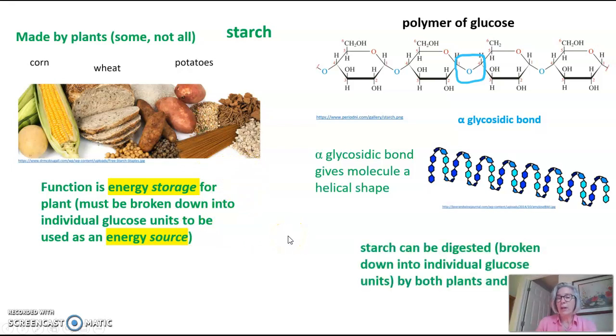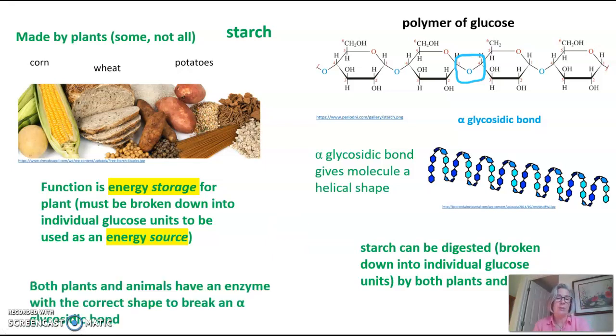Starch can be digested or broken down into individual glucose units by both plants and animals because both plants and animals have an enzyme with the correct shape to break down an alpha glycosidic bond.